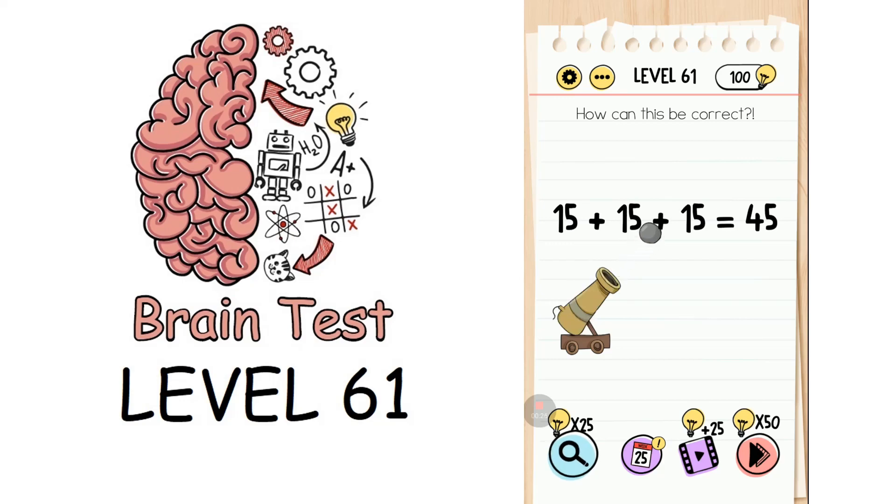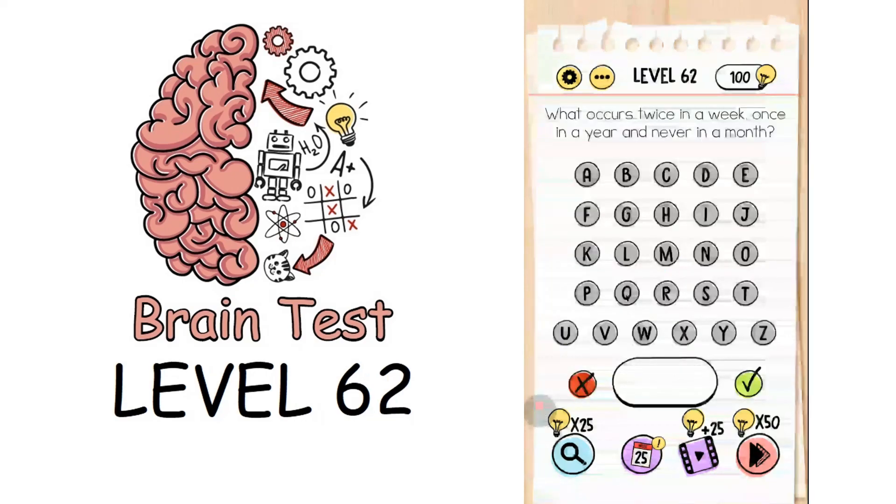Now we're on to level 62: what occurs twice in a week, once in a year, and never in a month? If you see, the letter E occurs two times in week, one time in year, and never in month. So it's letter E.